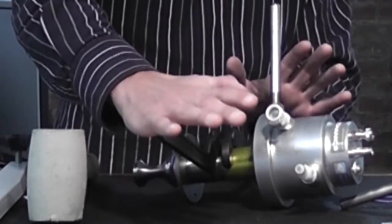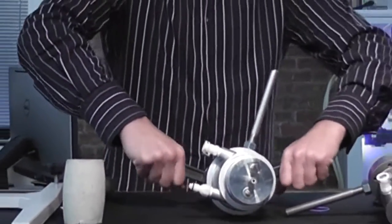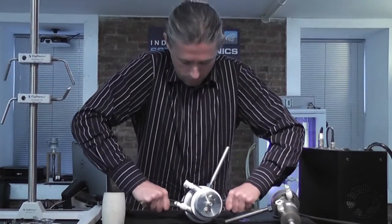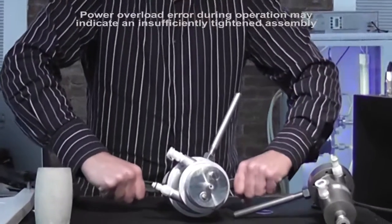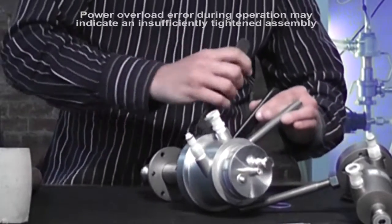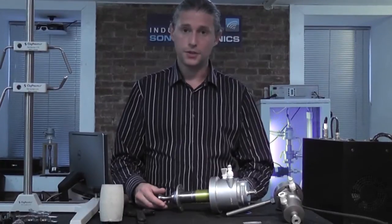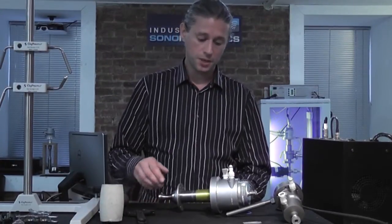Once you have the spanner wrenches positioned in this way, push down by hand. At this point, the horn and the transducer have been assembled.